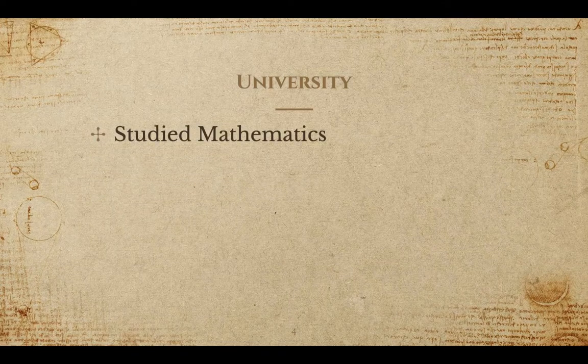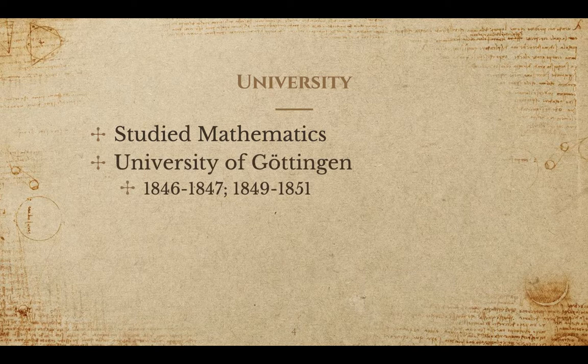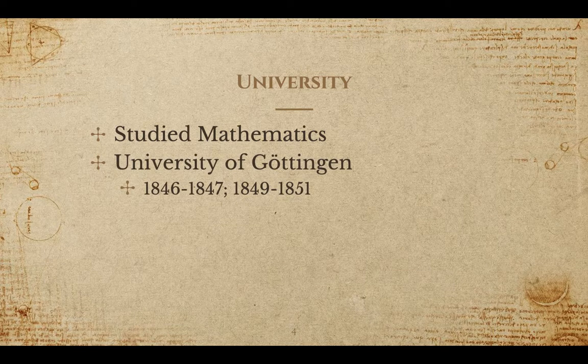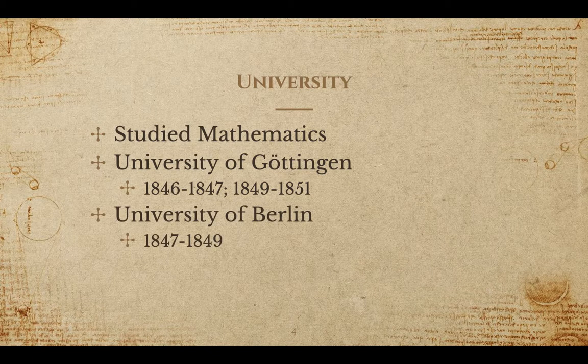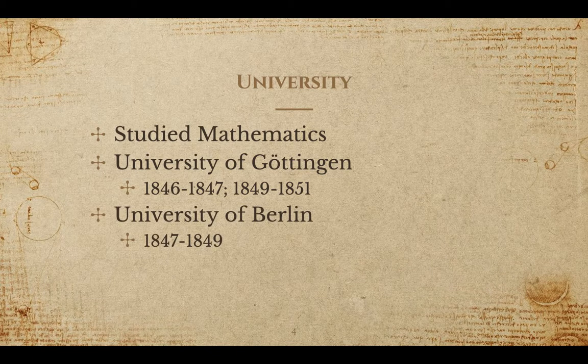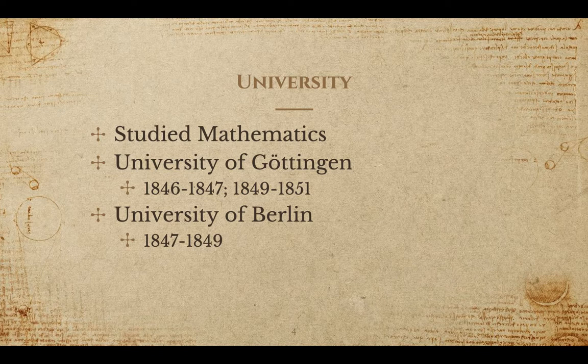Riemann studied mathematics at the University of Göttingen from 1846 to 1847 and again from 1849 to 1851. He did transfer to the University of Berlin for that interim period of 1847 to 1849.